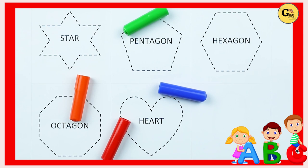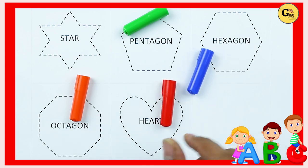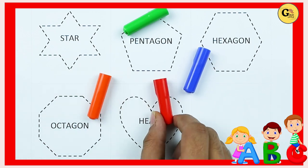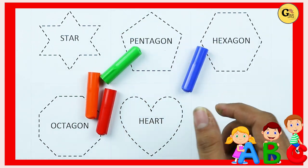Hello friends, today we will learn shapes: star, pentagon, hexagon, octagon, and heart with colors. Blue color, orange color, red color, green color.